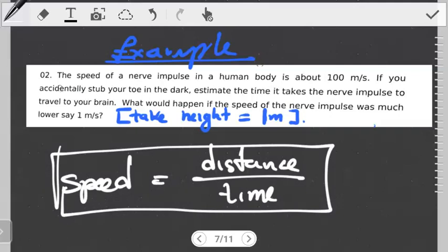For this question they're saying the speed of a nerve impulse in the human body is about 100 meters per second. If you accidentally stub your toe in the dark, estimate the time it takes the nerve impulse to travel to your brain. We're given an approximate speed and here the idea is that the speed is kind of constant, it doesn't really change that much.